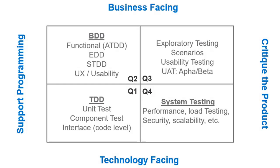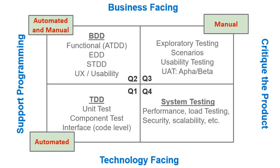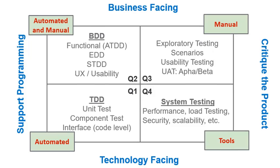Ideally, Q1 should be automated. Q2 could be a combination of automated and manual testing. Q3 is mostly manual. Q4 is tool driven.